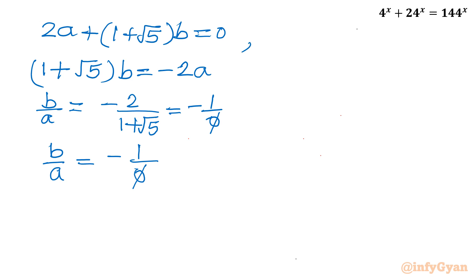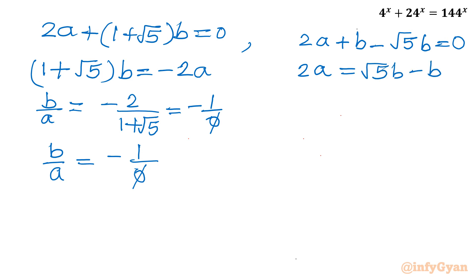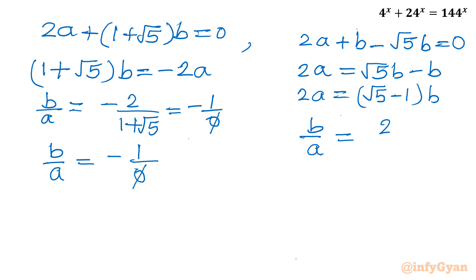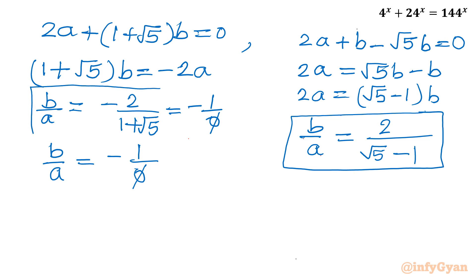Now let us consider the second equation: 2a + b - √5·b = 0. Taking the b terms to the right-hand side: 2a = (√5 - 1)b. So b/a = 2/(√5 - 1). We have now calculated two standard ratio results. We can substitute b = 12^x and a = 2^x directly to get our result.